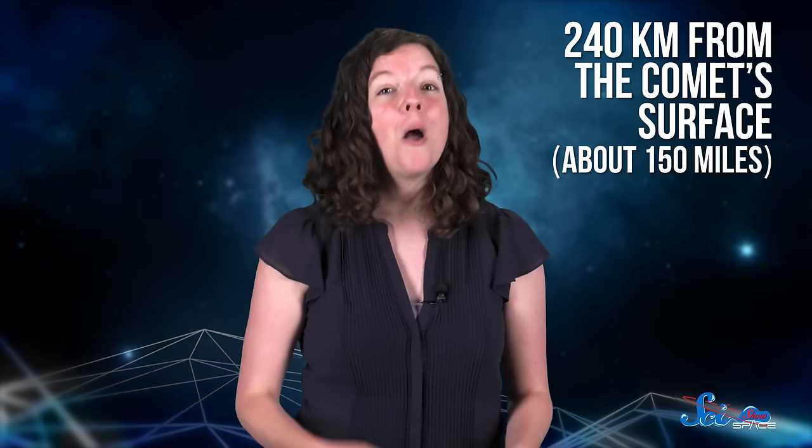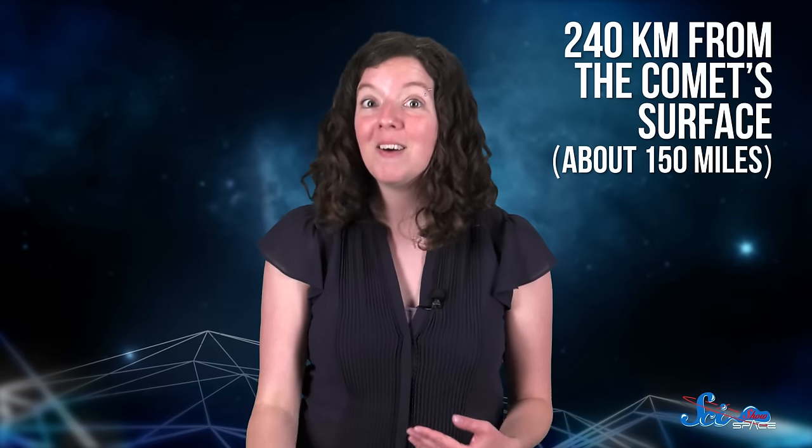By its third pass around the Sun, the spacecraft was going just fast enough to fly by Wild-2, some 240 kilometers from the comet's surface, which is still in the cloud of dust surrounding its icy, rocky center. So that's how they caught up to the comet.